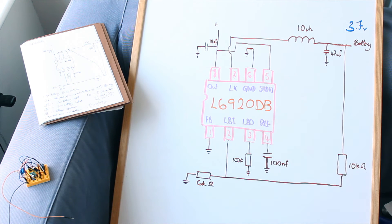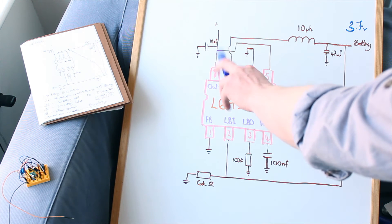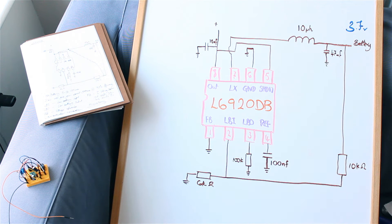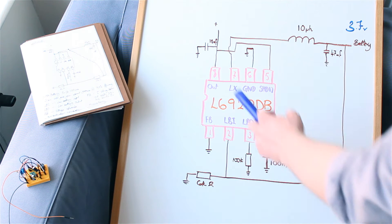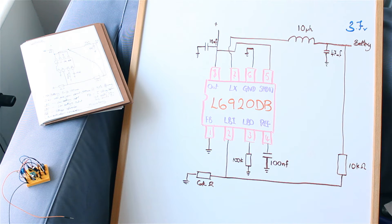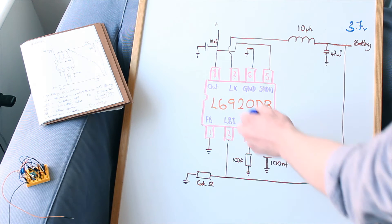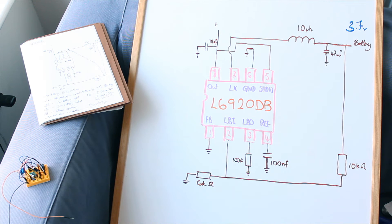And then we've got output here. Now I've thrown on a 10 nano farad capacitor just there. And that's your positive output with your output also showing the same ground as the battery.